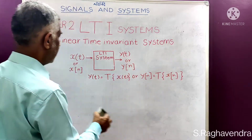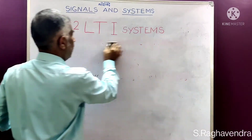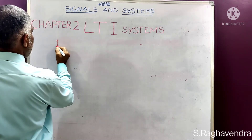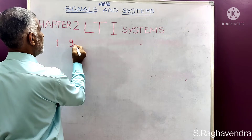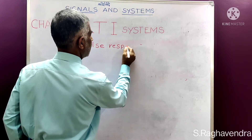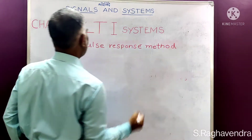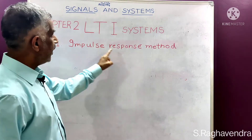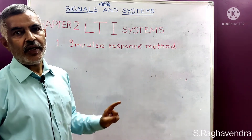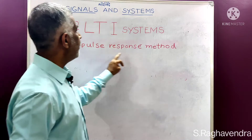The first method is what is known as the impulse response method. Under this method, you come across what is known as convolution — convolution between continuous time signals or convolution between discrete time signals. This is what is known as the impulse response method.